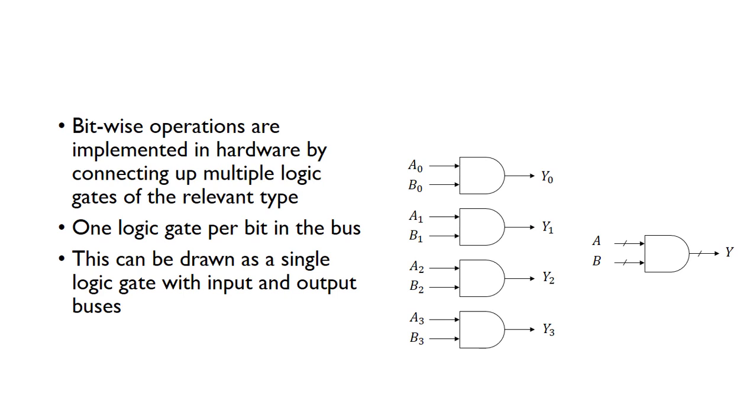These are implemented in hardware just using multiple logic gates of the relevant type. We need one logic gate per bit in the bus. For the four-bit example we just saw, we need four AND gates or four OR gates.